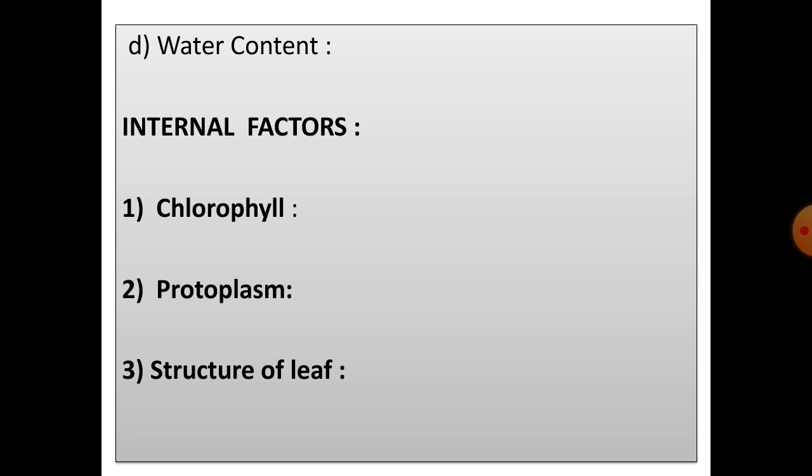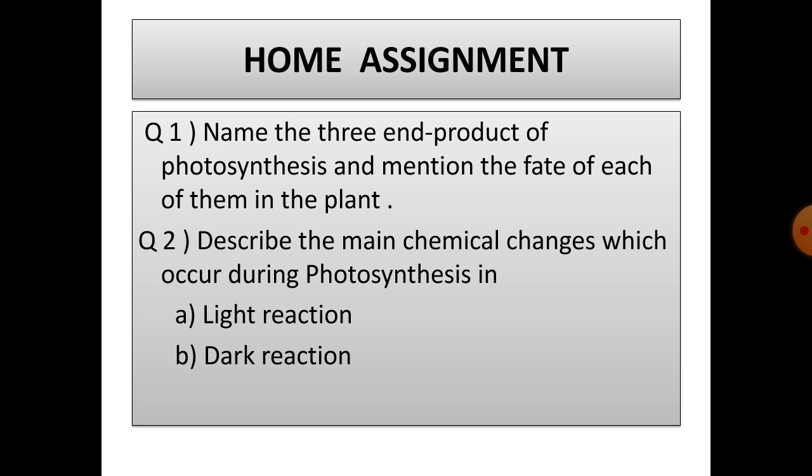The internal factors include chlorophyll, protoplasm, and structure of leaf. Nutritional deficiencies of minerals can cause a loss of chlorophyll, so there will be a drop in trapping of solar energy. Dehydration of protoplasm for some reason reduces the rate of photosynthesis. The thinness of cuticle, the distribution of stomata, and the size of the leaf influence the amount of light and carbon dioxide entering the leaf.